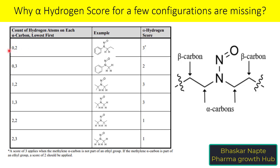The 0 in configuration 0,2 stands for no hydrogen atom present on that alpha carbon. Nitrosamines have two alpha carbons — one on each side of the nitrogen. You count the hydrogens on both alpha carbons, starting with the one that has the minimum number of hydrogens first, followed by the next. For example, on the alpha carbon connected to an aromatic ring there are no hydrogens — so 0 comes from that. On the second alpha carbon there are two hydrogens — so 2. Hence the configuration is 0,2.